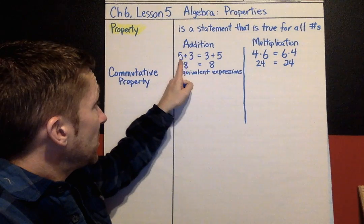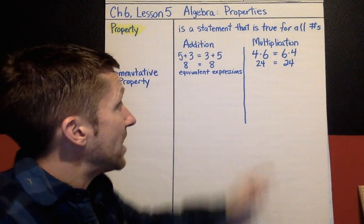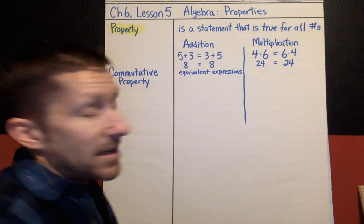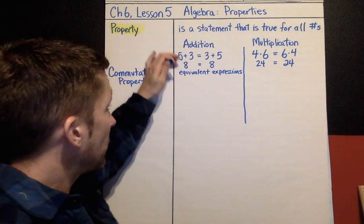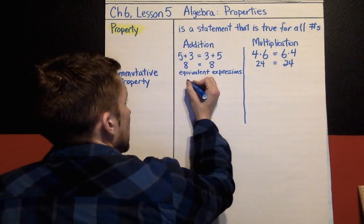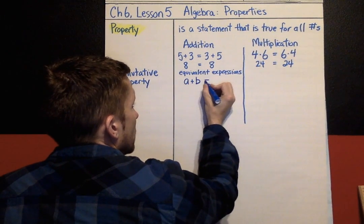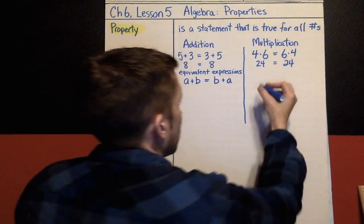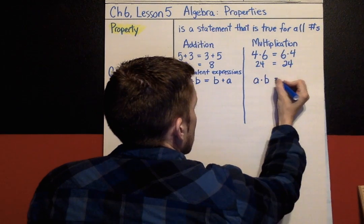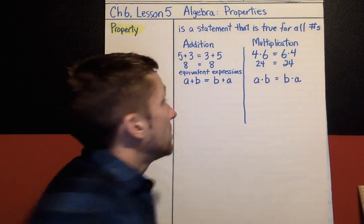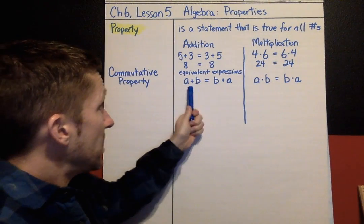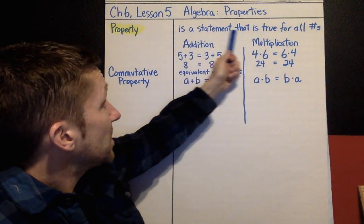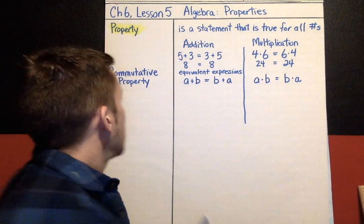The commutative property of addition says 5 plus 3 is the same thing as 3 plus 5 — the order doesn't matter. Same with multiplying: if you're multiplying two numbers, the order does not matter. I'm now going to write the commutative property using variables, because it's true for any numbers. A plus B is the same thing as B plus A. On the multiplication side, A times B is the same thing as B times A. A property is a statement that's true for all numbers.